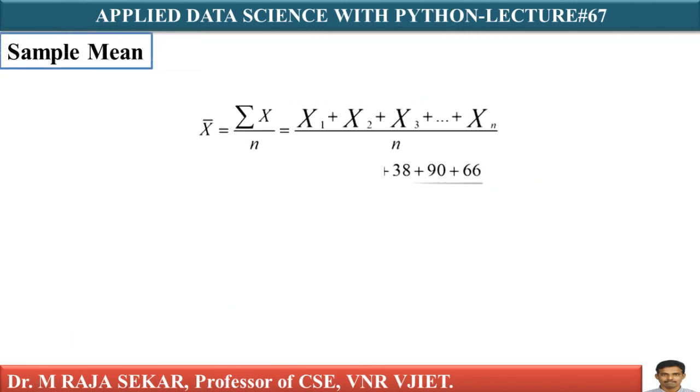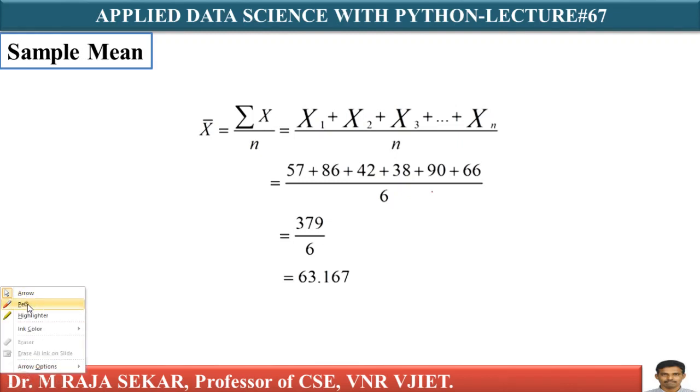Sample mean. Let me say I have a sample. This sample consists of data 57, 86, 42, 38, 96, 6. I collected this sample from particular population. Sample mean is indicated by x bar, whereas population mean is indicated by mu. This sample mean you are getting is 63.167.